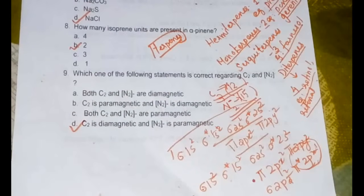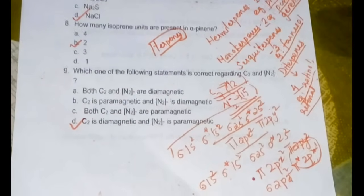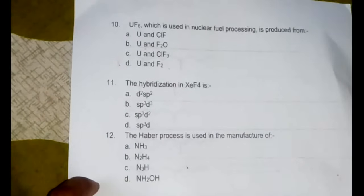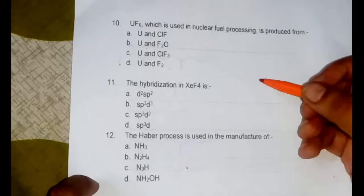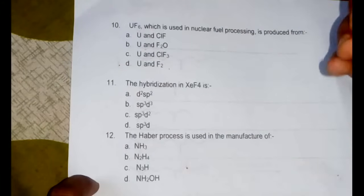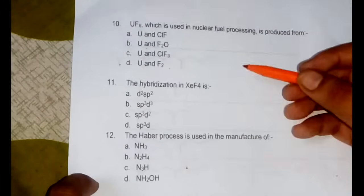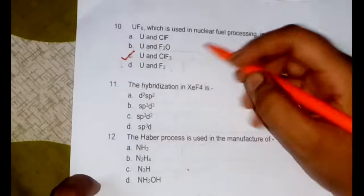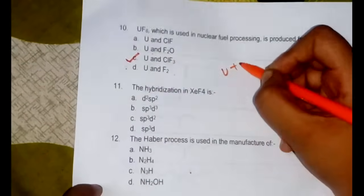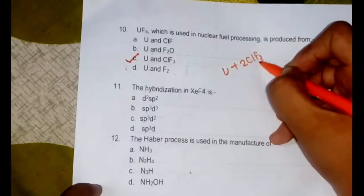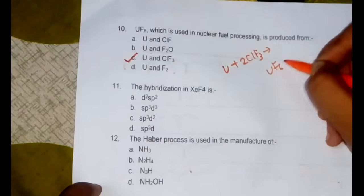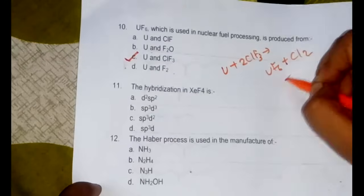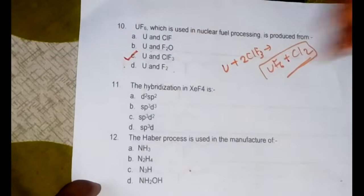Now the next question: UF6 is used in nuclear fuel processing and it is produced from - so UF6 is used in the nuclear reprocessing and in that case it is produced by using uranium and ClF3 and the reaction goes like this: U plus 2ClF3 gives UF6 plus Cl2. So this is the equation and therefore option C would be the right answer.